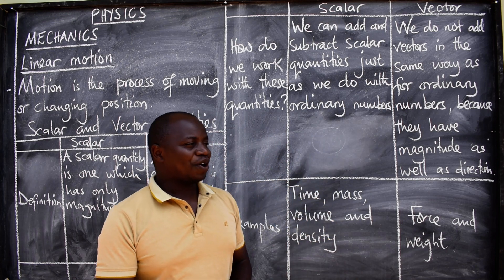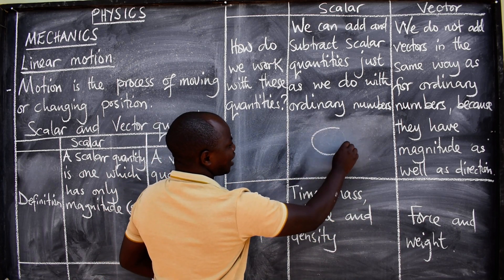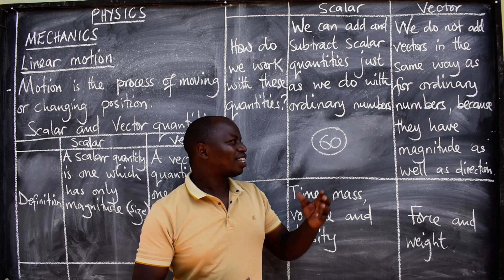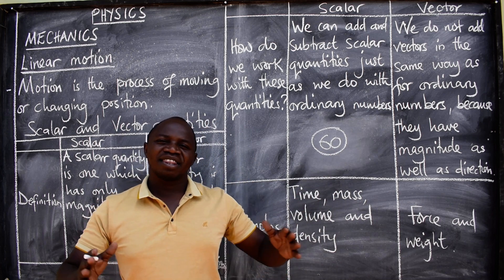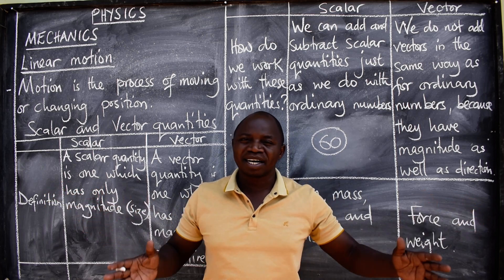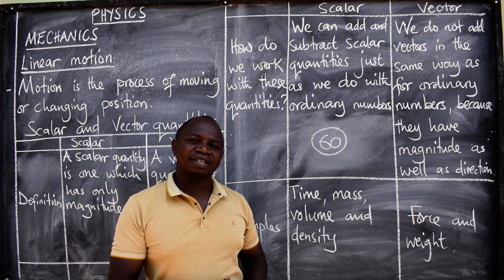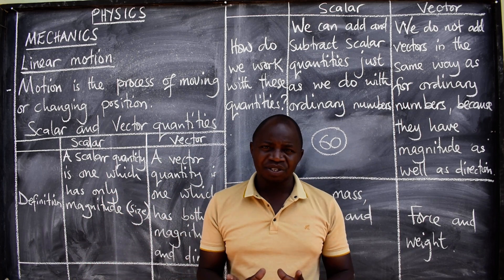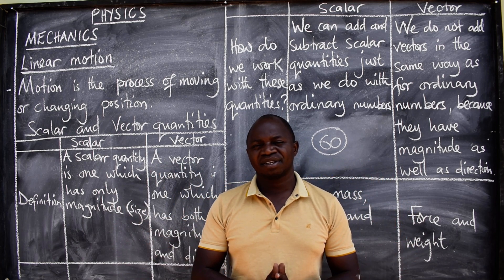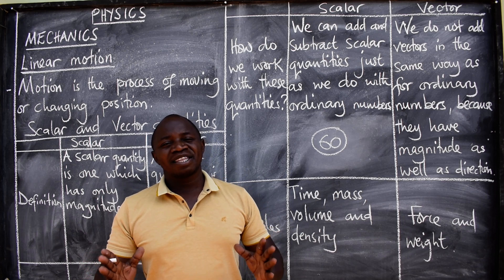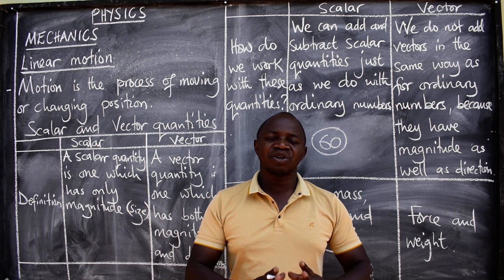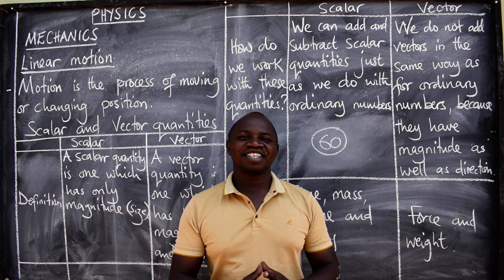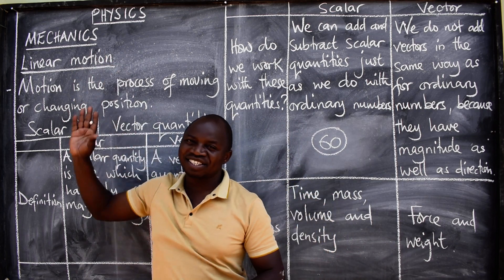We also have signs of this nature — it's written 60 inside a circle. What does that mean to the driver? It means in this area you are supposed to travel at a maximum speed of 60 km per hour. But what will happen if the driver ignores all these signs? These are some of the reasons why we are having a lot of accidents.